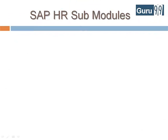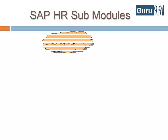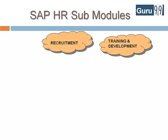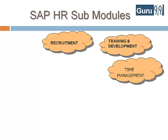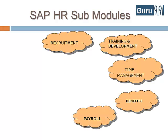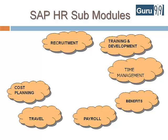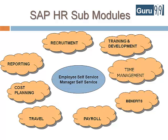The various sub-modules or functionalities supported by SAP HR include: Recruitment, Training and Development, Time Management, Employee Benefits, Payroll, Travel, Cost Planning, Reporting, and ESS and MSS. We will look into the details of the sub-modules later in the tutorials.